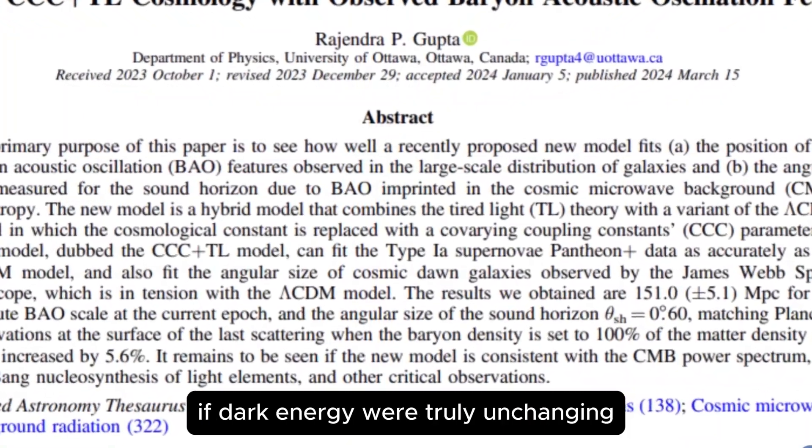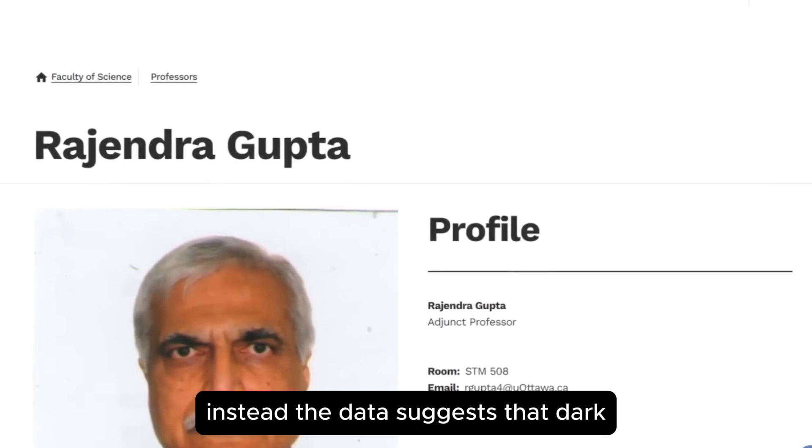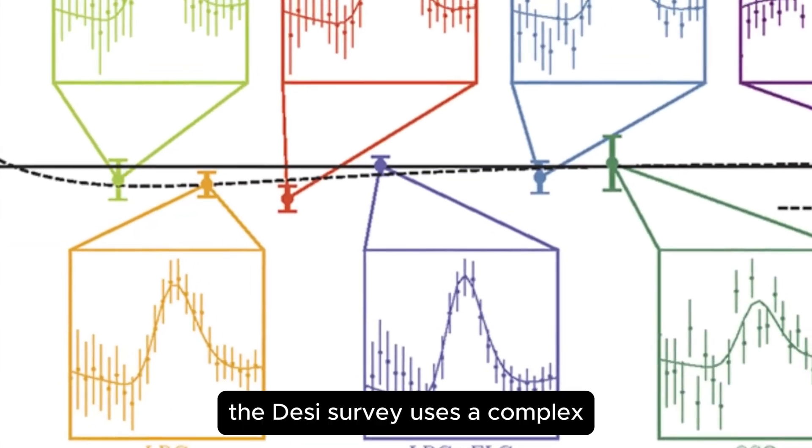Galaxies aren't as spread apart as they should be if dark energy were truly unchanging. Instead, the data suggests that dark energy might be weakening over time.